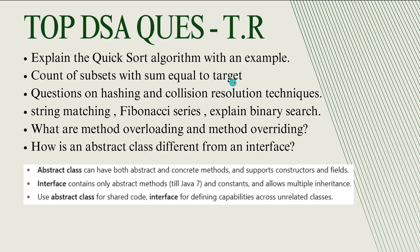Count of subsets with sum equal to a target: they will give an array and a target element — for example, target equals 5 — and you should count the number of subsets present in the array whose sum equals that target. Questions on hashing and collision resolution techniques. String matching and Fibonacci series are also important. For string matching, they will give a string and if the sentence contains that string you return it; if not, print that no matching element is found. Have a complete idea on hashing.